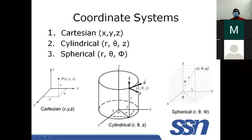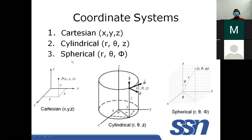In the spherical system, beyond R, the angle from the X axis is theta, and the inclination from the Y axis is phi. By defining R, theta, and phi, you can locate a point in spherical coordinates. In this session, we will restrict our discussion to the Cartesian and cylindrical coordinate systems only.